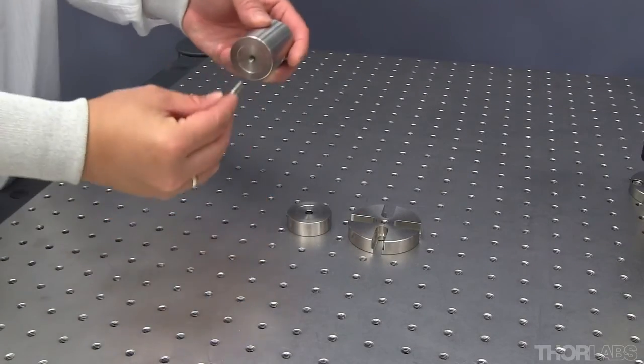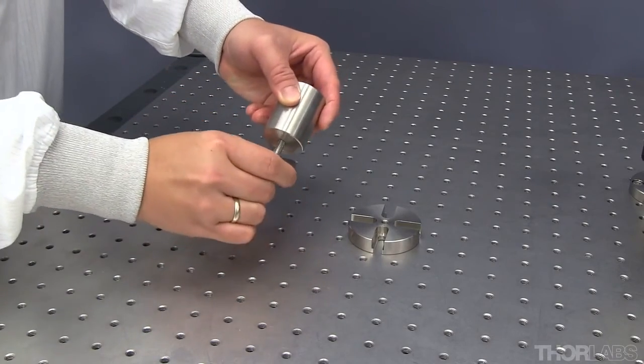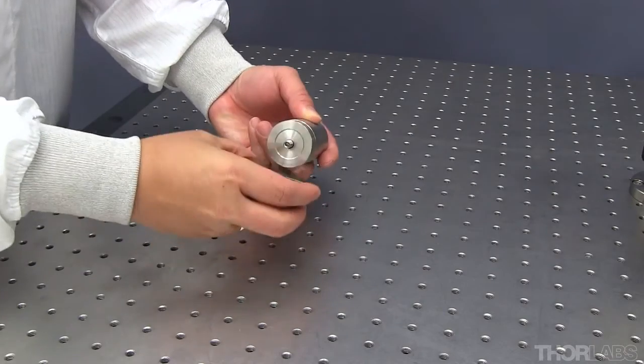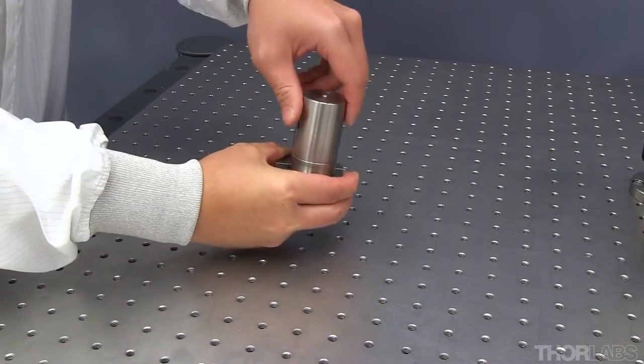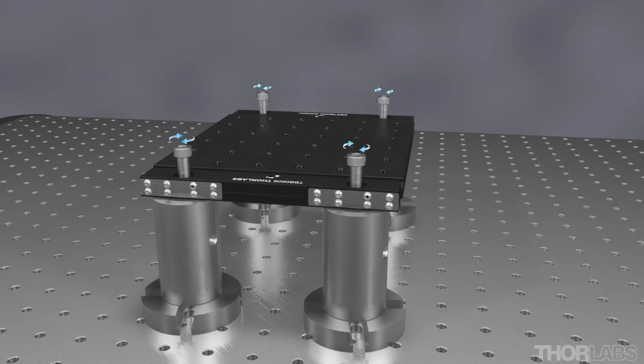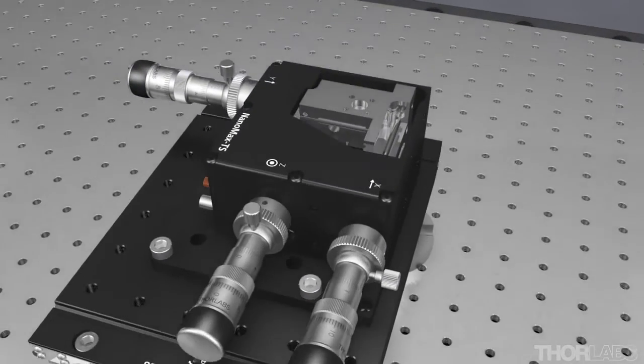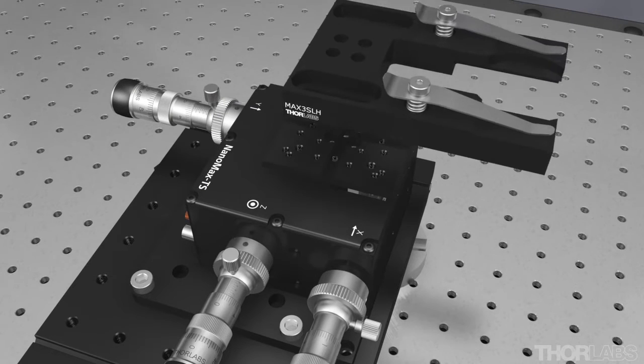Each support post is composed of a post, a spacer, and a base. Using the set screw, assemble each post as shown here. Mount the translating breadboard to the 4 support posts. Then attach the NanoMax translation stage to the breadboard. Finally, mount the slide holder to the translation stage.